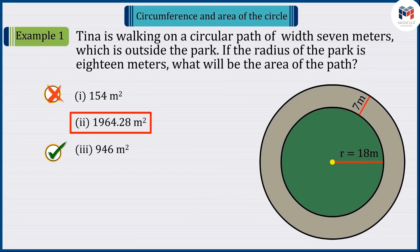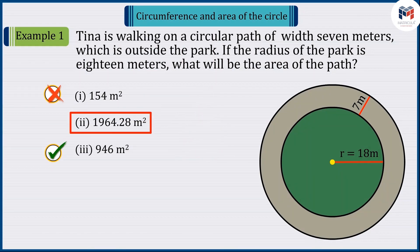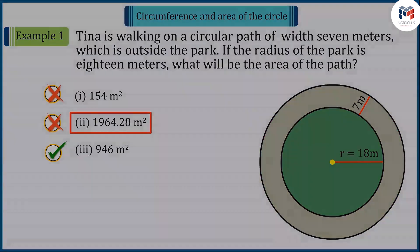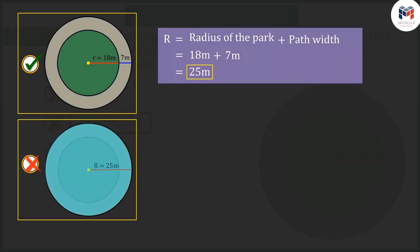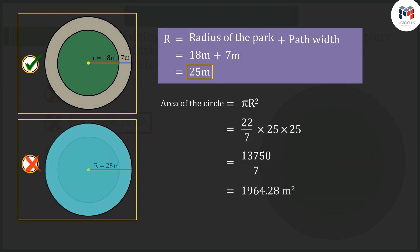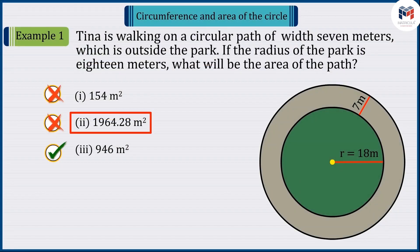If you selected option 2, it was a good try, but it was the wrong answer. Because here you are not finding the area of the path — rather, the area of the circle using the total radius of the park and the path, which is why you get the wrong answer. Often, children make such mistakes where they are unable to correctly identify the radius or diameter of the circle and determine the wrong area.